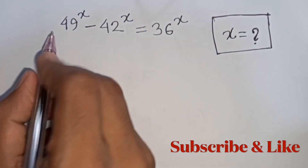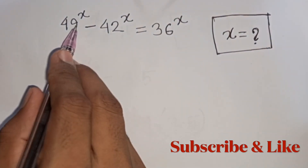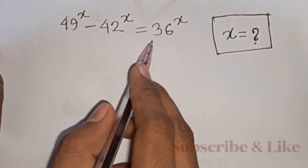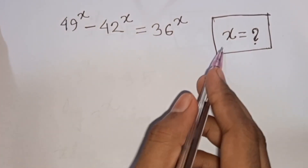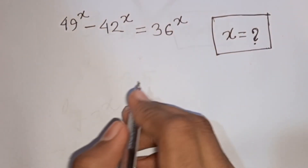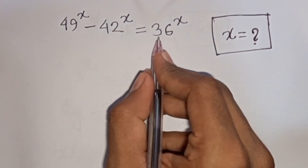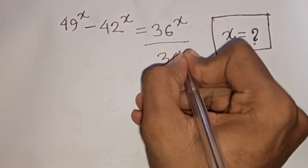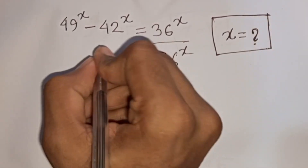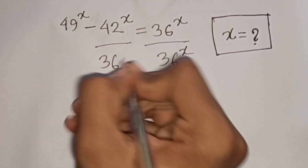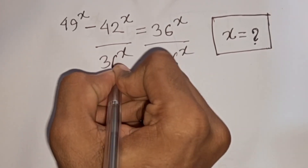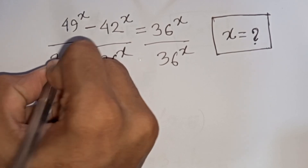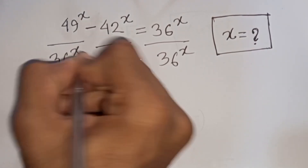How to solve 49 power x minus 42 power x is equal to 36 power x. What is the value of x? So at first we divide both sides by 36 power x.